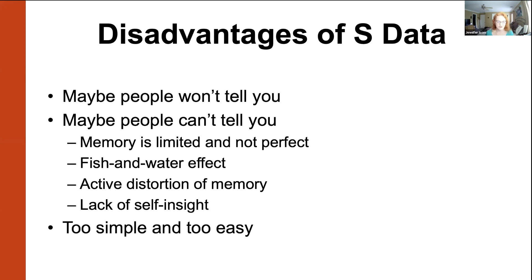Other people argue that self-report data is not great because everybody can do it and everybody overuses it. We need to use other kinds of data and not just rely on self-report. Most personality research papers up until about 20 years ago were almost totally reliant on self-report data. Because of all these disadvantages, we can't be so sure that everything everyone reports about themselves is totally accurate. So sometimes maybe self-report is too simple and too easy.